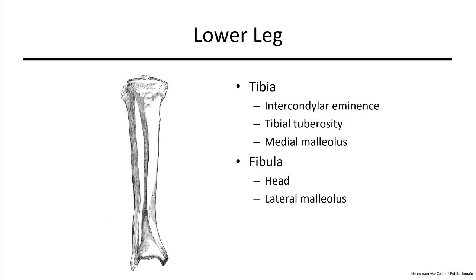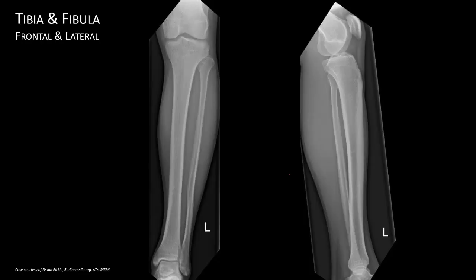Together, the lower leg is made up of the tibia and fibula. On x-ray we can see the intercondylar eminence, tibial tuberosity, and the patella with the patellar ligament connecting to the tibial tuberosity. Views of the knee show the condyles of the femur, the tibial plateau, the head of the fibula, the lateral malleolus of the fibula, and the medial malleolus of the tibia.